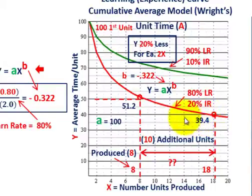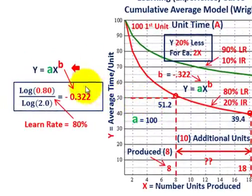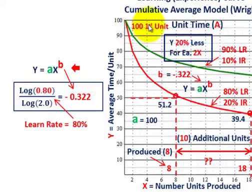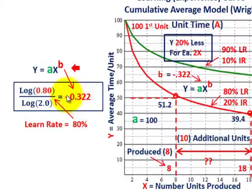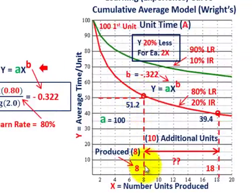Looking at our formula again: Y equals A times X raised to the power of B, where B equals log of 0.80 divided by log of 2.0, which equals negative 0.322. Our average time per unit Y times units X gives us total cost. We can take units times average time per unit to make the comparison and determine the cost for 10 additional units.